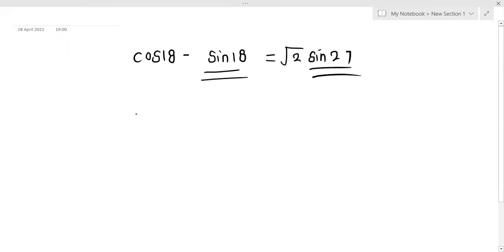What do we do? This sin 18 is cos of 72. So we can write cos c minus cos d as 2 sin of c plus d by 2, times sin of d minus c by 2.